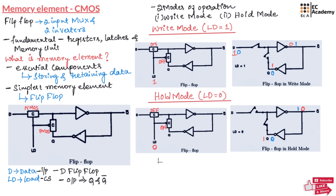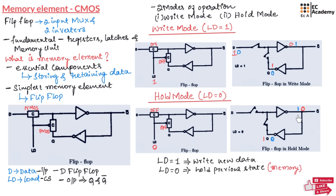These two mechanisms give the flip-flop its memory capability. When LD is equal to 1, this memory unit writes new data. When LD is equal to 0, this memory unit holds the previous state, which is what makes it act as memory. The two inverters ensure that the signal is cleanly inverted and stabilized, making the circuit a very good memory element. We have understood a simple circuit which demonstrates how memory elements can be built using fundamental CMOS components. This is about memory elements using CMOS technology. Hope you have understood the topic. Thank you.